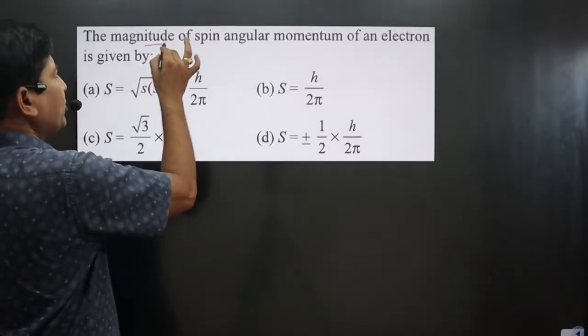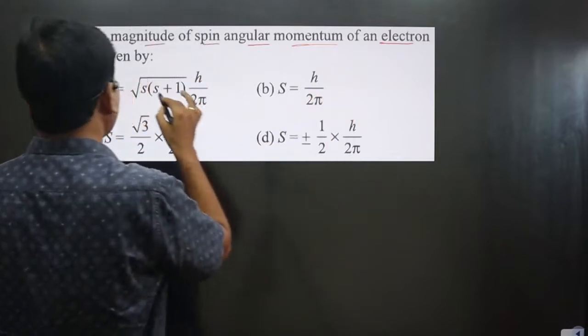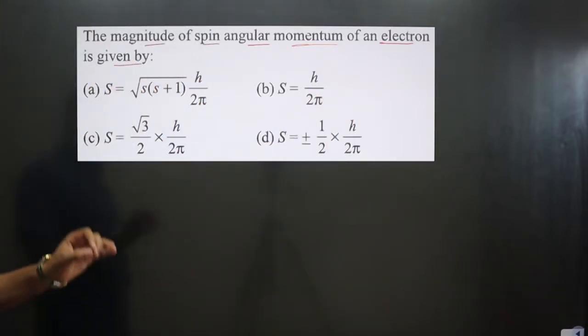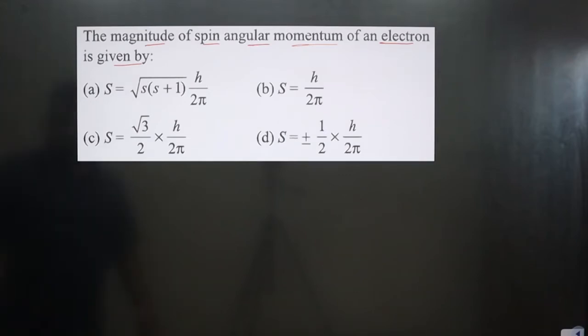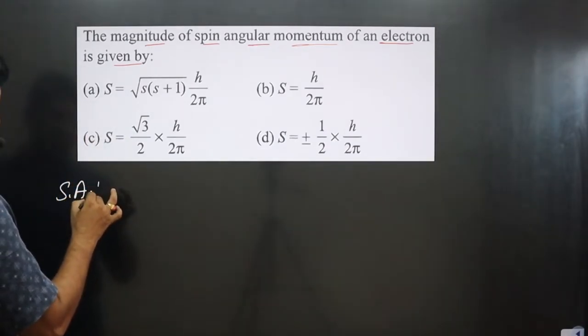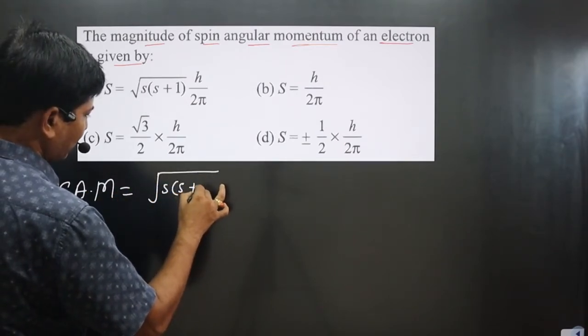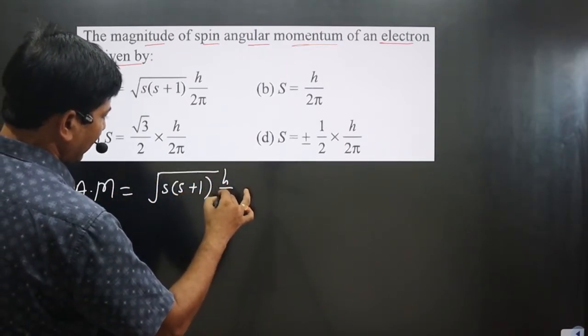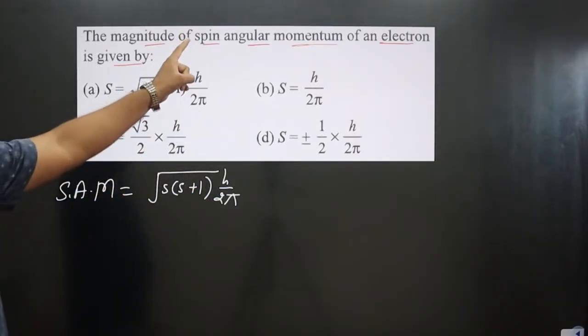The question asks for the magnitude of spin angular momentum of an electron. The formula for spin angular momentum is √[s(s+1)] × ℏ/(2π). Since we have to calculate the spin angular momentum for an electron, we'll use this formula.